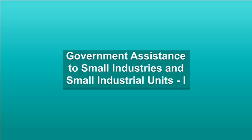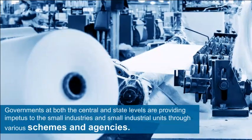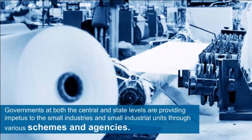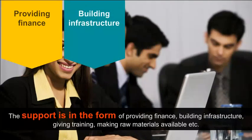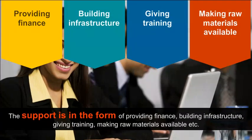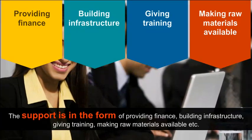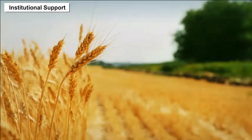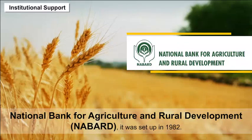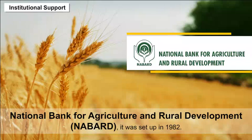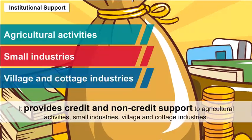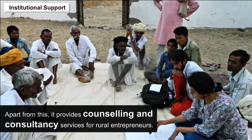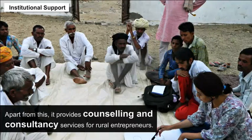Government Assistance to Small Industries and Small Industrial Units: Governments at both the central and state levels are providing impetus to small industries through various schemes and agencies. The support is in the form of providing finance, building infrastructure, giving training, and making raw materials available. Institutional Support — 1. National Bank for Agriculture and Rural Development (NABARD): Set up in 1982, it provides credit and non-credit support to agricultural activities, small industries, and village and cottage industries, along with counselling and consultancy services for rural entrepreneurs.